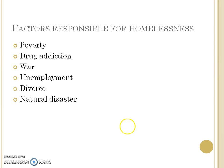The fifth factor is divorce — if a female who is not working and lacks financial independence, and whose parents are also not ready to keep her, will suffer from homelessness. The last factor is natural disaster — floods, tsunamis, earthquakes — where a person's home may be destroyed, making them homeless.